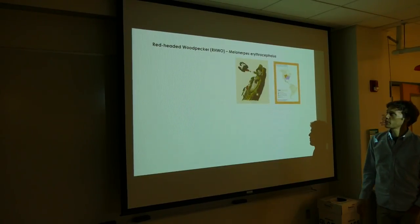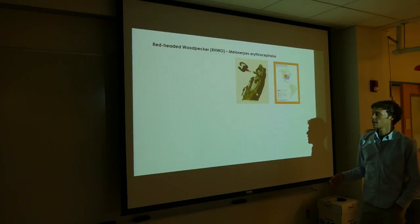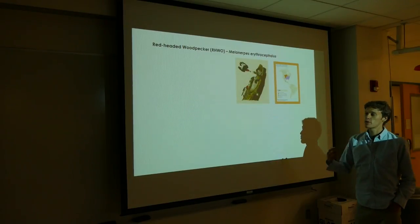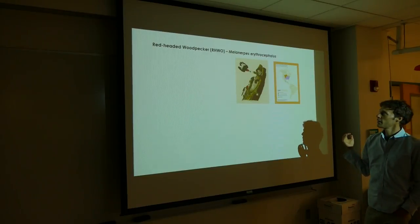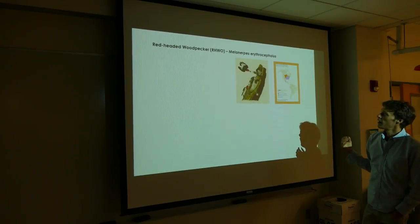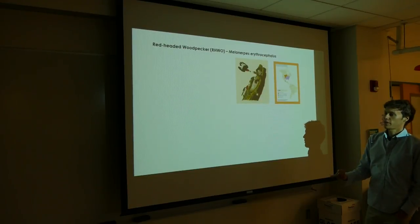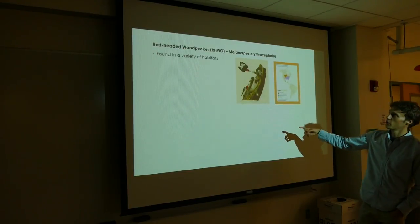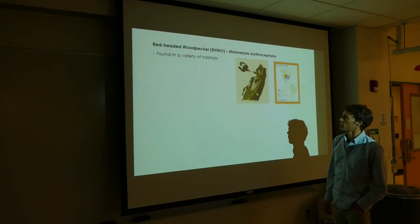For my work, I want to utilize new methods to get at a basic question in ecology. What drives species distributions? I'm studying this in a species that's declining and that also uses complex habitat types. I just want to go over a few of the life history traits that are relevant for the Red-headed Woodpecker.